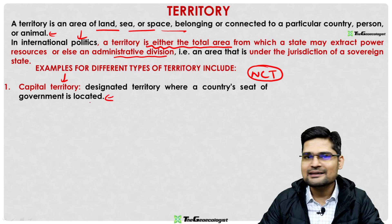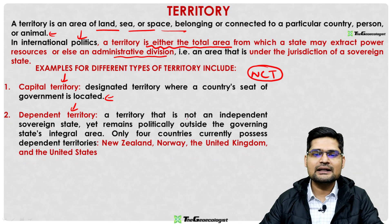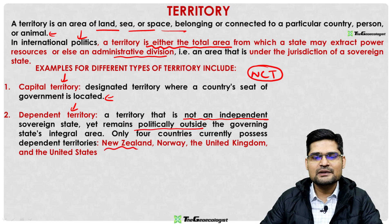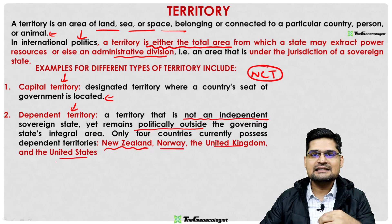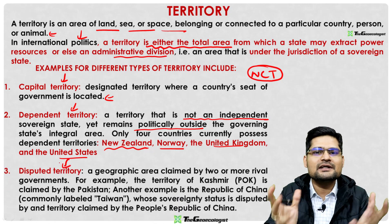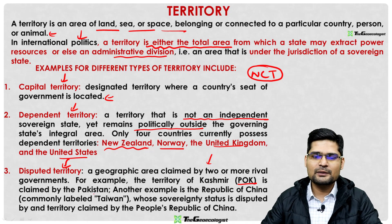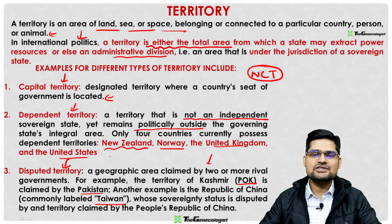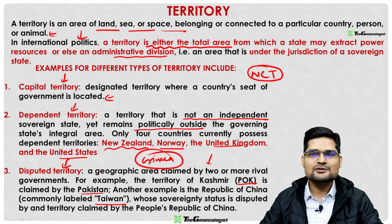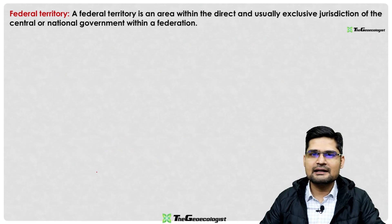A dependent territory is one that is not an independent sovereign state but remains politically outside the governing integral area — New Zealand, Norway, the UK, and the US have such territories. Disputed territories are contested areas, such as Pakistan-occupied Kashmir, Taiwan with China, Crimea between Russia and Ukraine, and the Donbas region. Federal territory falls within the direct and exclusive jurisdiction of a central government within a federation.